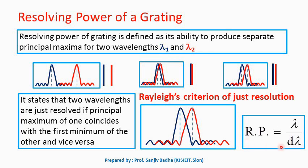If two wavelengths are just resolved by the optical device, then the resolving power of that device is given by the ratio of the smaller wavelength to the difference between the two wavelengths.